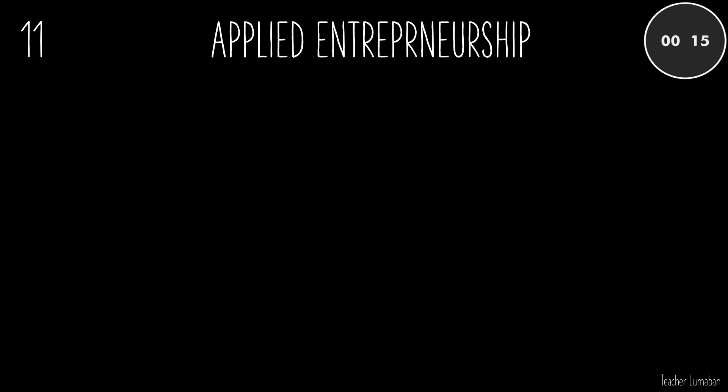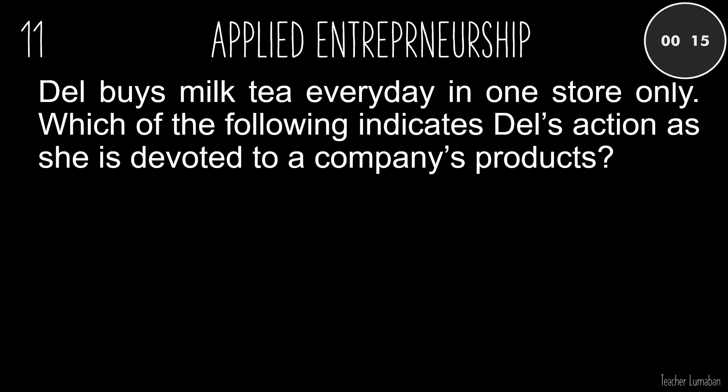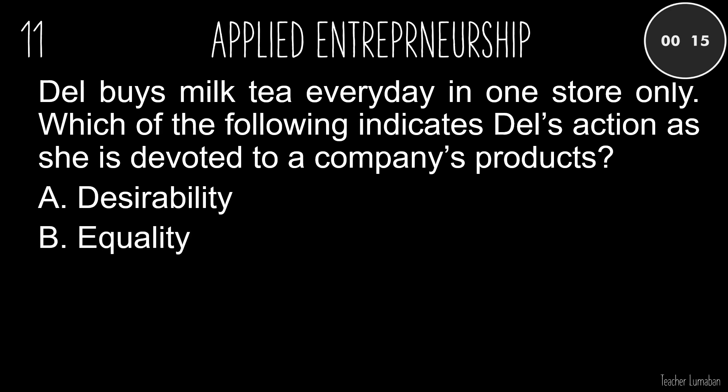Del buys milk tea every day in one store only. Which of the following indicates Del's action as she is devoted to a company's products? A. Desirability. B. Equality. C. Loyalty. D. Quality.